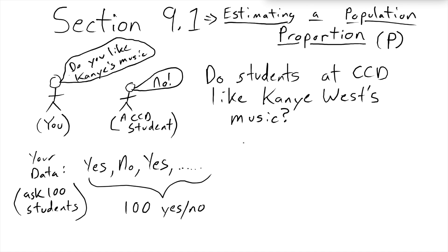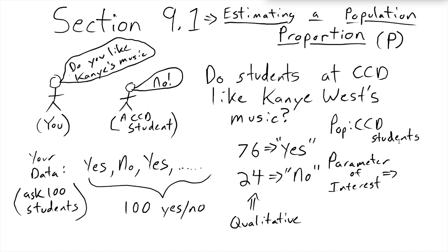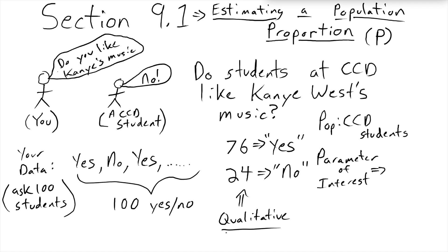After some careful analysis, you look to see that you have 76 people that respond yes and everyone else responded no. This is your data and furthermore, you realize that there's a number you are actually trying to figure out and we call that the parameter of interest. In this case, it's going to be a proportion because your data is qualitative and you can't take an average of a bunch of yeses. What you really want is the proportion of your population that like Kanye's music. In symbols, it's a big capital P.